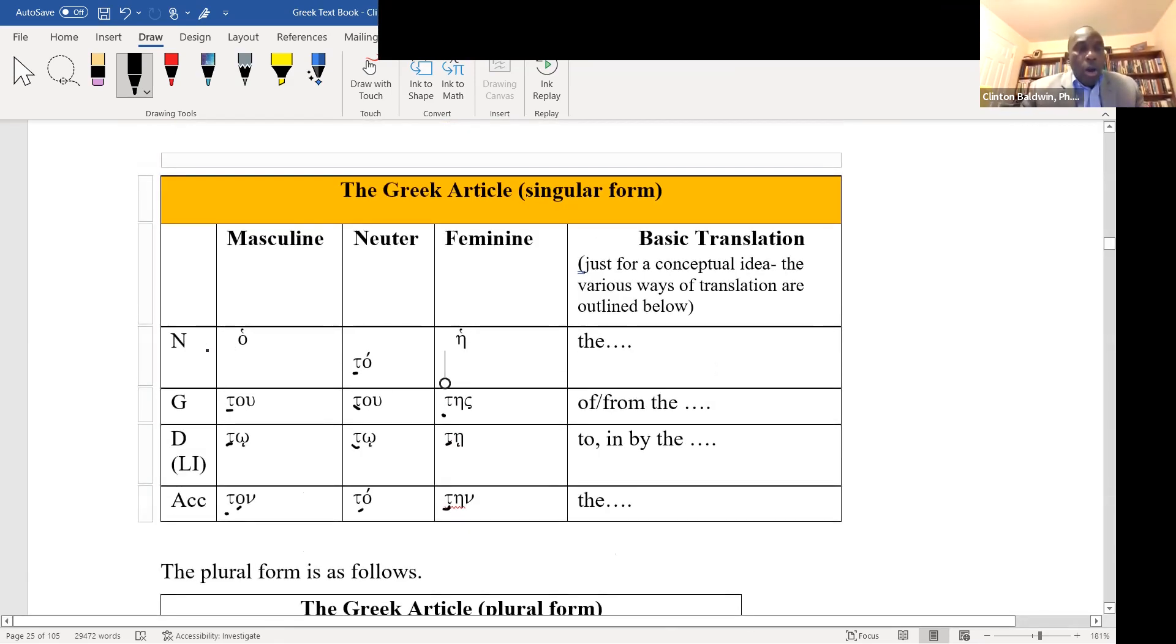Therefore, it will agree with its governed entity in gender, number, and case. We see the article in different cases, and gender and number. So ho is the nominative case, masculine article, singular. To, genitive case, masculine article, singular number, etc. Are you with me? So the article has gender, number, and case.